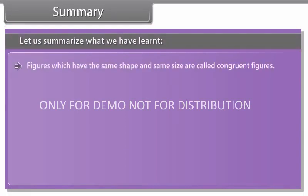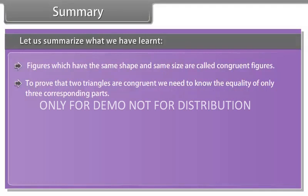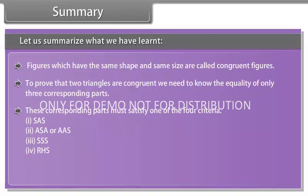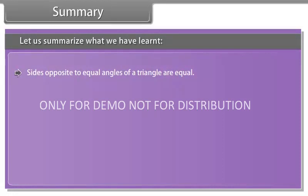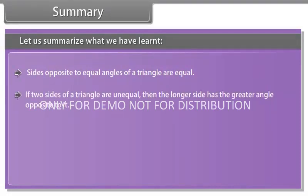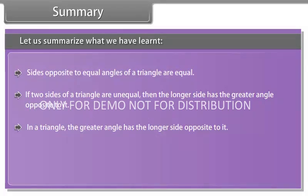Summary. Let us summarise what we have learnt. Figures which have the same shape and same size are called congruent figures. To prove that two triangles are congruent, we need the equality of only three corresponding parts, satisfying one of the four criteria: 1. SAS; 2. ASA or AAS; 3. SSS; 4. RHS. Angles opposite to equal sides of a triangle are equal. Sides opposite to equal angles of a triangle are equal. If two sides of a triangle are unequal, then the longer side has the greater angle opposite to it. In a triangle, the greater angle has the longer side opposite to it. The sum of any two sides of a triangle is greater than the third side.